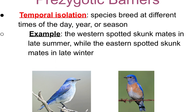Temporal barriers occur when species breed at different times of day or have different breeding seasons. The western spotted skunk mates in late summer while the eastern spotted skunk mates in late winter. Even though these species look the same, there is still a barrier between them that prevents mating from occurring.